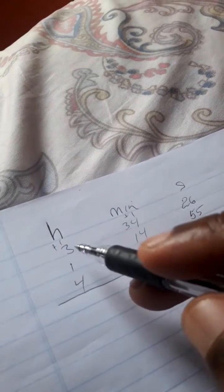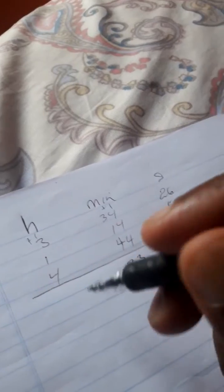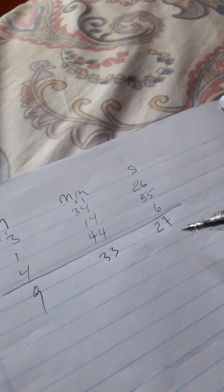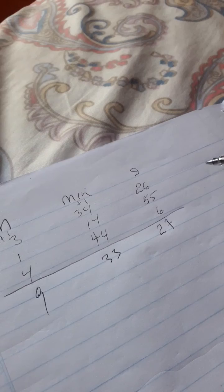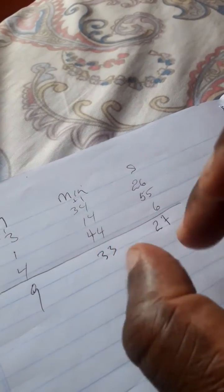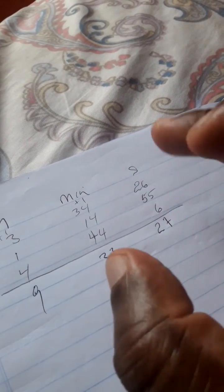I want to add this up. One plus three plus one plus four, I get nine hours. So the answer is nine hours, 33 minutes, and 27 seconds. Remember, for these two columns, you should get less than 60 for each.